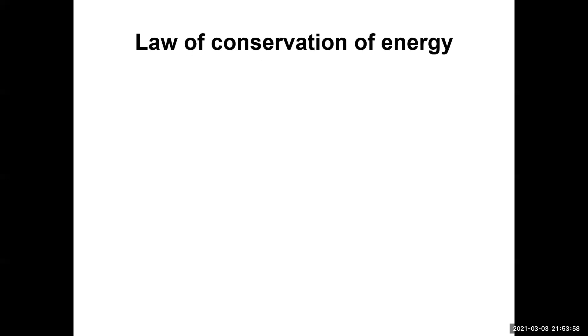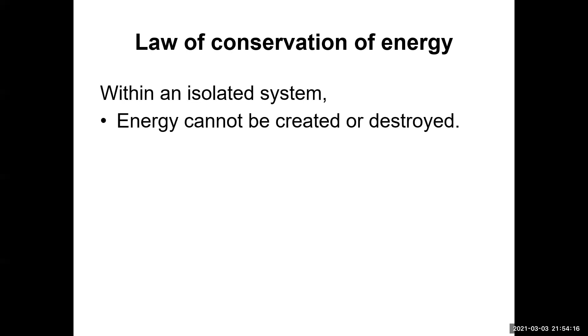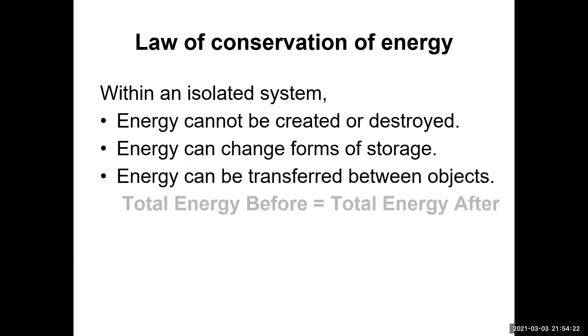This is a really important concept we're going to talk about here. It's called the law of conservation of energy. And it basically says that if we have an isolated system, an isolated system is one where the boundaries are such that it does not allow mass nor energy to pass through its boundary. If we have an isolated system, then energy cannot be created or destroyed. It can change forms of storage, and it can be transferred between objects. But the total energy present in all the objects before a certain event, collision, whatever the case may be, has to equal the total energy after.